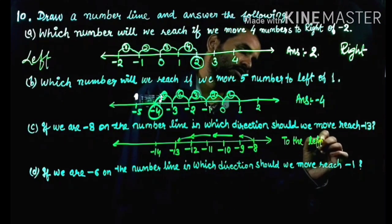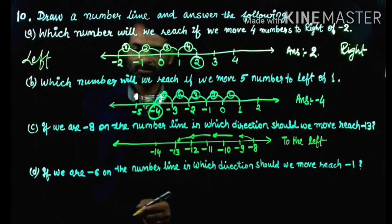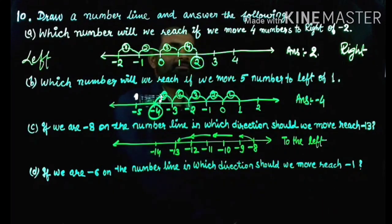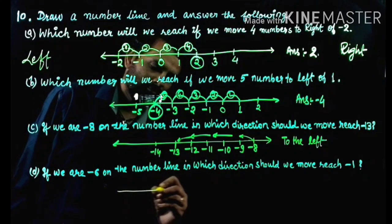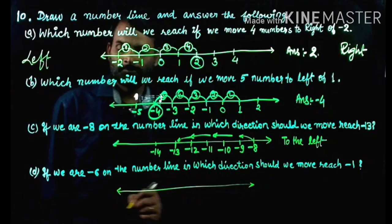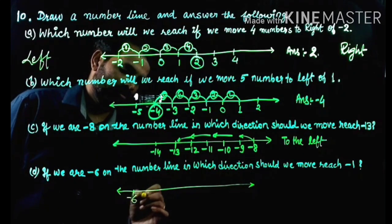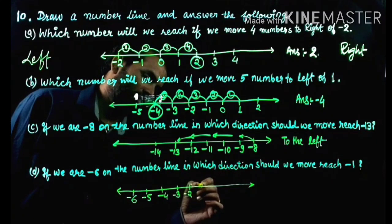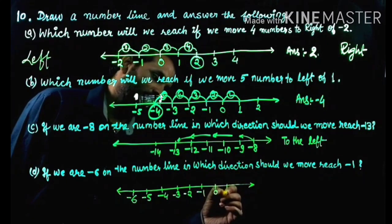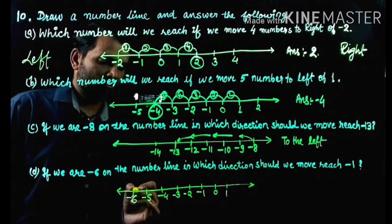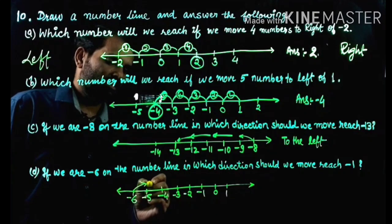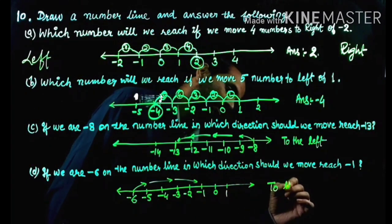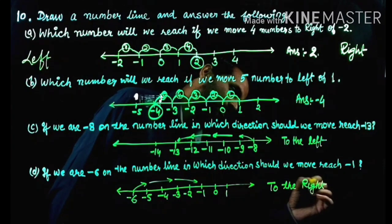In the last question: if you are at minus 6 on the number line, in which direction should you move to reach minus 1? Draw the number line: minus 6, minus 5, minus 4, minus 3, minus 2, minus 1. Your position is minus 6 and you move to reach minus 1. The answer is: move to the right direction.